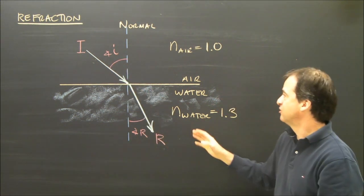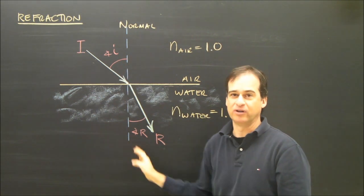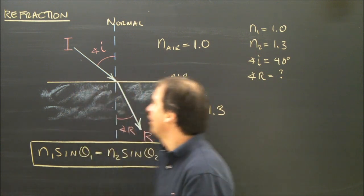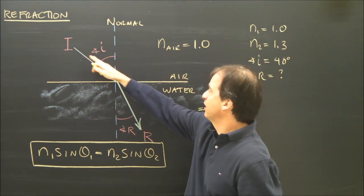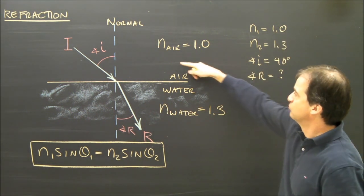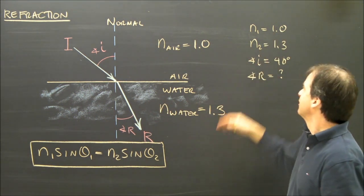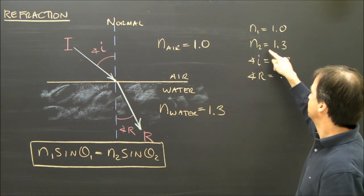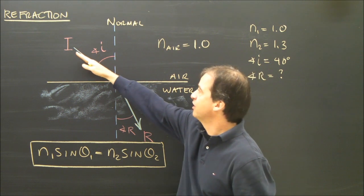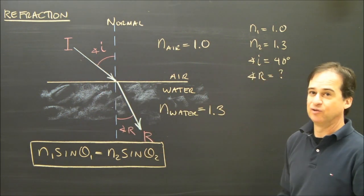So what you need to know is: the index for one material, the index for the other, and all these angles. Let's quickly try a sample problem. I've got a light ray coming in from air to water. The index of air, the first material, is 1.0. The index for water, the second material, is 1.3. The angle of incidence is 40 degrees. I want to know what the angle of refraction is.